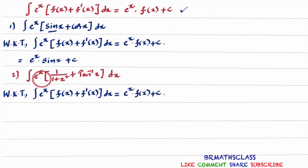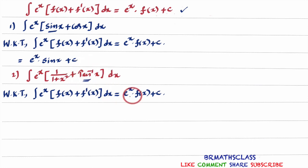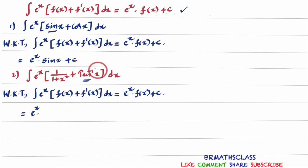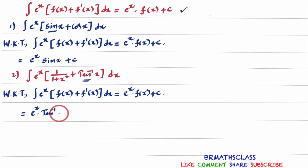Here, which one is f(x)? That is important. We know that the derivative of tan⁻¹x is 1 divided by 1 plus x². So tan⁻¹x is f(x). Using the formula eˣ into f(x) plus c, we write the answer directly. Here f(x) is tan⁻¹x, so the answer is eˣ into tan⁻¹x plus c.